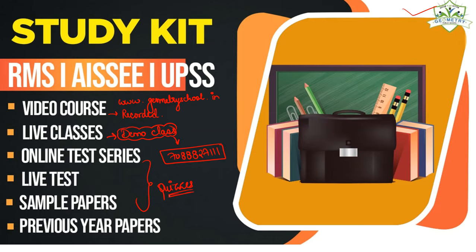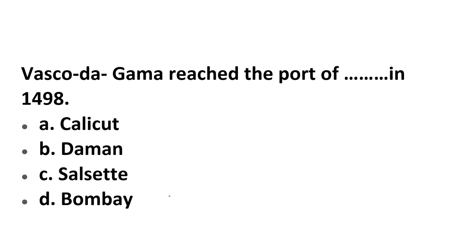Vasco da Gama reached the port of which city in 1498 when he came to India? The options are Calicut, Daman, Salsette, and Bombay. Vasco da Gama first reached Calicut port — A is the correct answer.